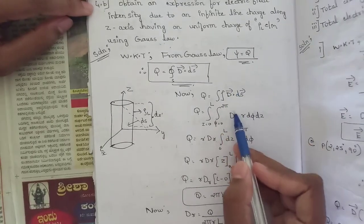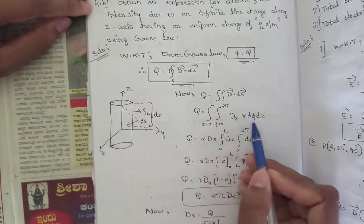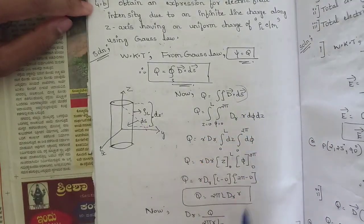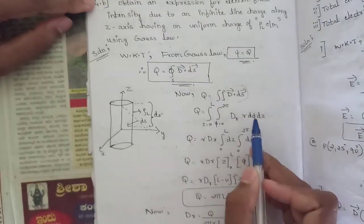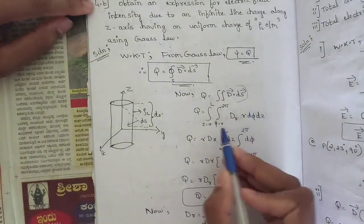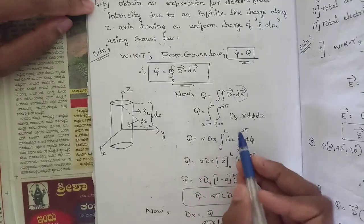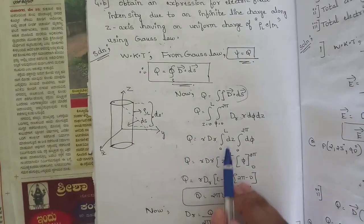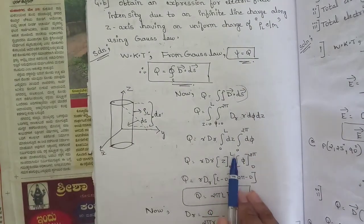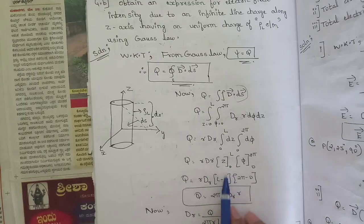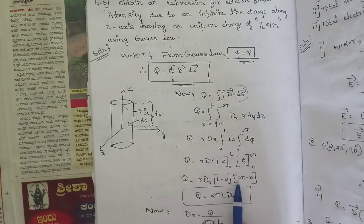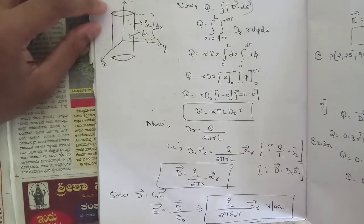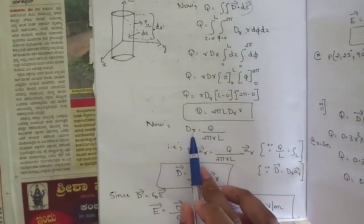D is replaced by Dr, and dS is substituted as r dφ dz. Taking r Dr common, we integrate dz from 0 to L and dφ from 0 to 2π. Integration of dz gives L minus 0, and integration of dφ gives 2π minus 0, so Q equals 2π into L into Dr into r.